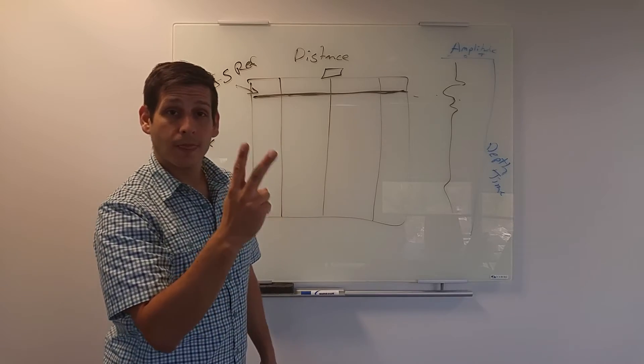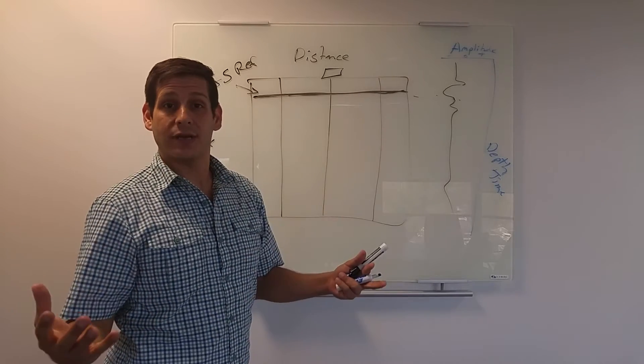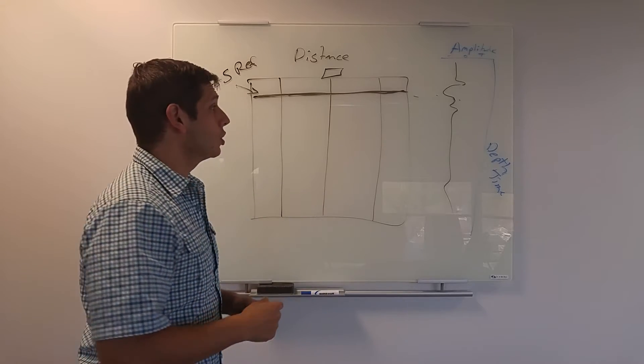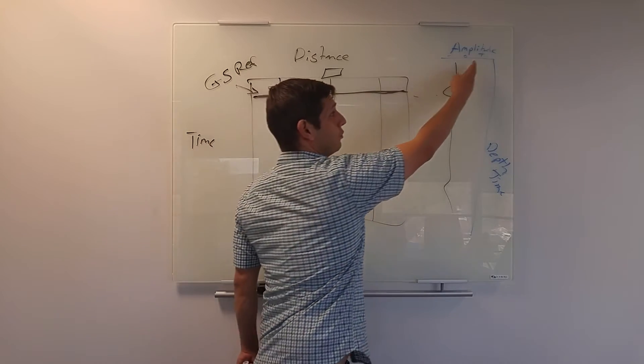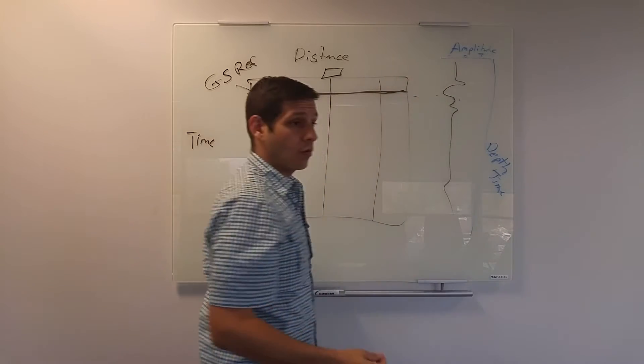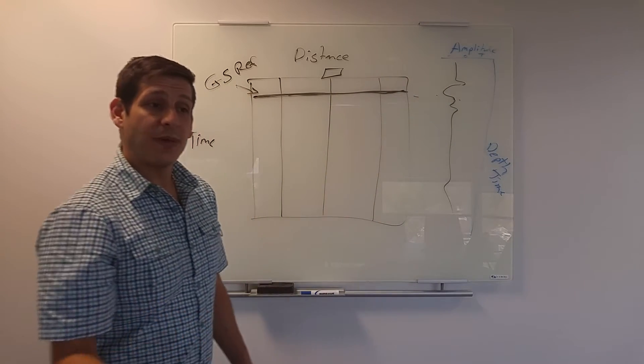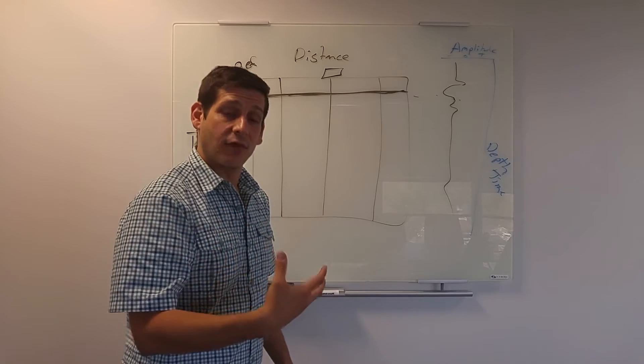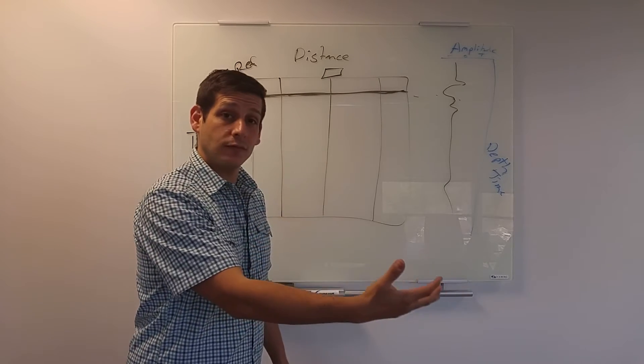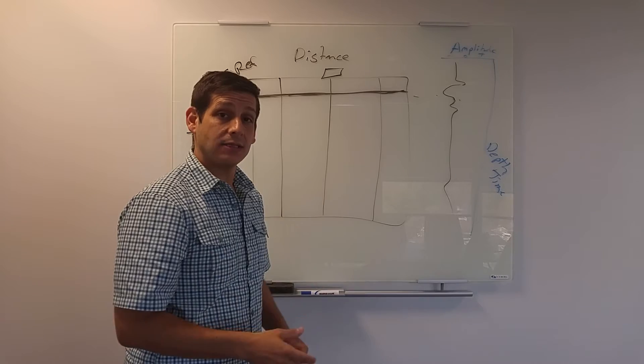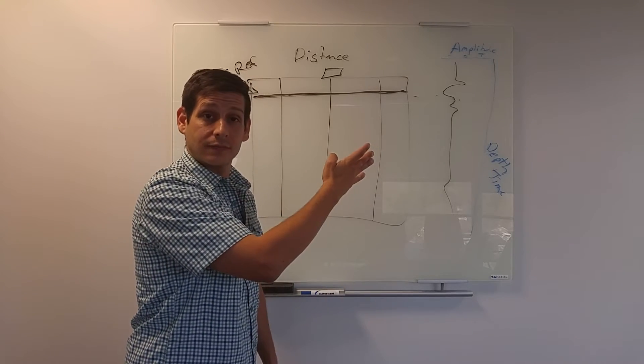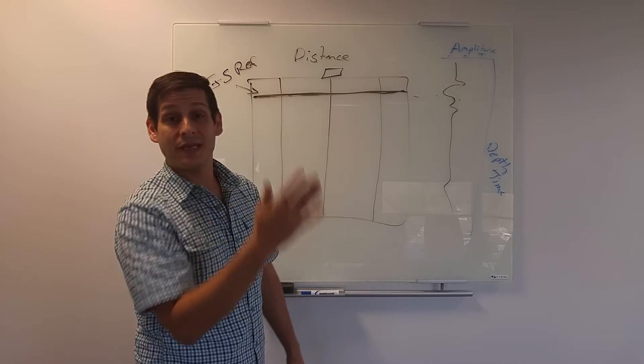Benefit number two is the polarity. Like I said before, it gives you positive and negative. Why is this important? Depending on what material your wave is transitioning from and into is going to create a reflection of one or the other poles. It might be positive. It might be negative.